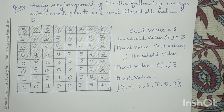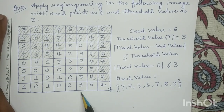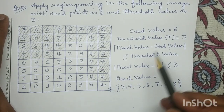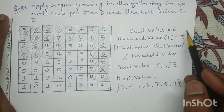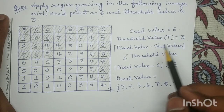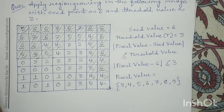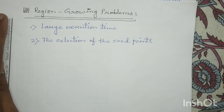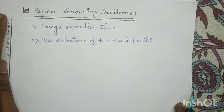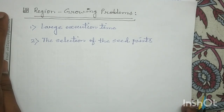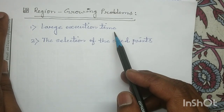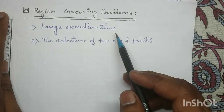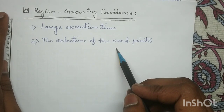Finally, for this given input image considering seed value 6 and threshold value 3, we have grown our region. This method works very well and helps in image segmentation, but the major drawback of region growing is that it takes large execution time and the output depends upon the selection of the seed point.